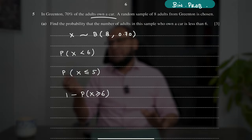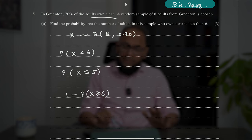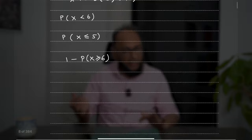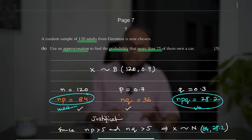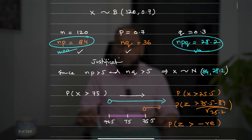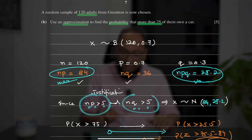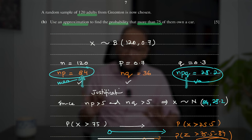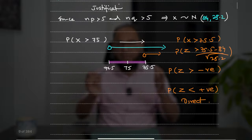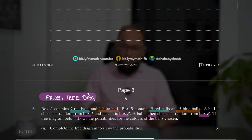Question 5: 70% of adults own a car — a simple binomial probability is asked first. Then a random sample of 120 adults is used with normal approximation to binomial. Justify the approximation: np > 5 and nq > 5. If valid, mean = np and variance = npq. Write these explicitly. Always apply continuity correction when moving from a discrete to a continuous distribution — use a number line to determine the correct correction.